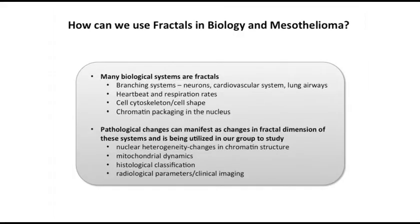So how can we use fractals in biology and mesothelioma? Many biological systems — that is, nature itself — have developed branching systems such as neurons, the cardiovascular system, lung airways, heartbeat and respiration rates that are also very iterative types of functions, cell cytoskeletal cell shape, as well as chromatin packaging in the nucleus, where you can have fractal globules within the nucleus themselves.